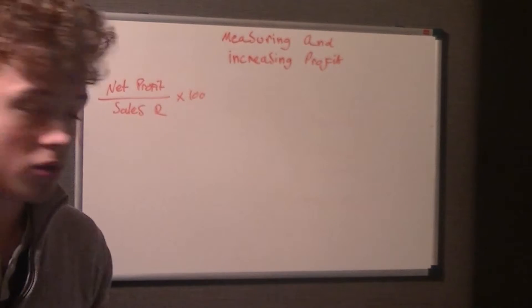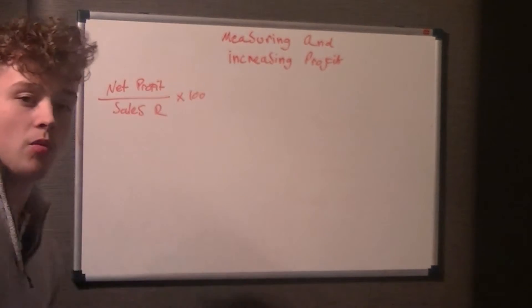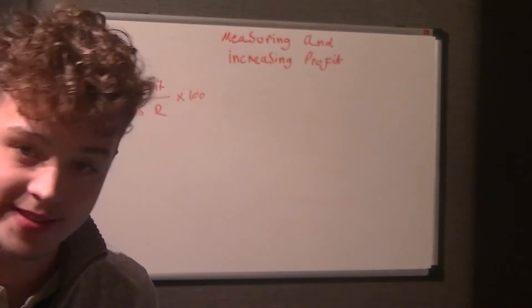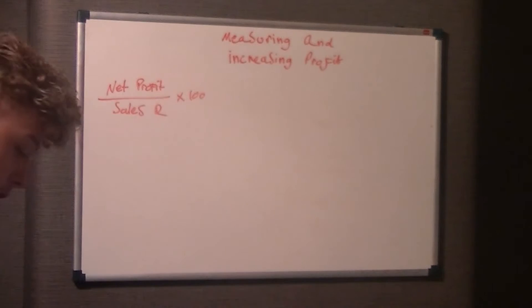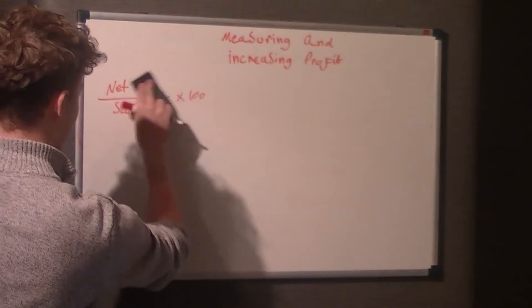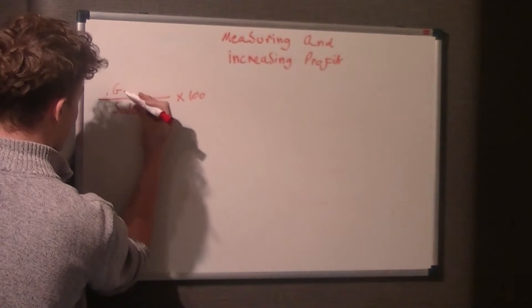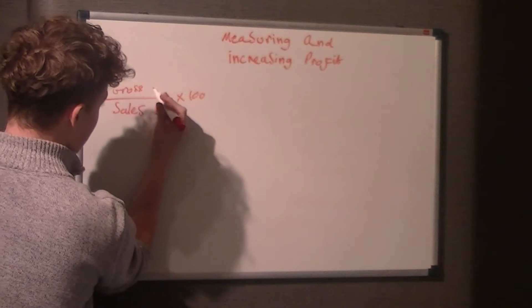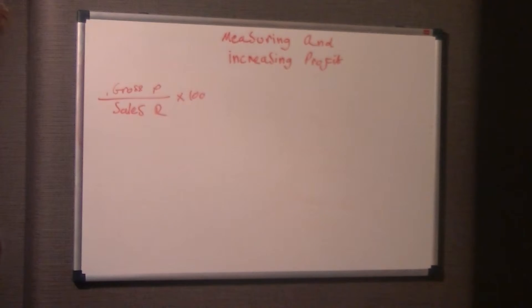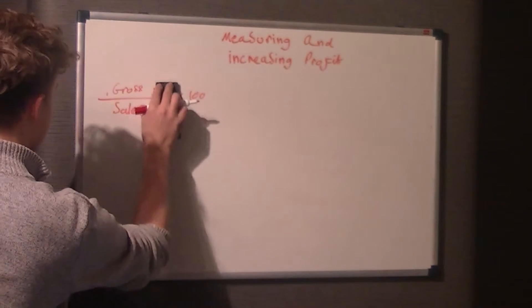So that essentially has shown us for the net profit what proportion of that is the sales revenue. Now there's the same for gross profit margin, you just replace the net profit with gross profit. And this works for just about anything.